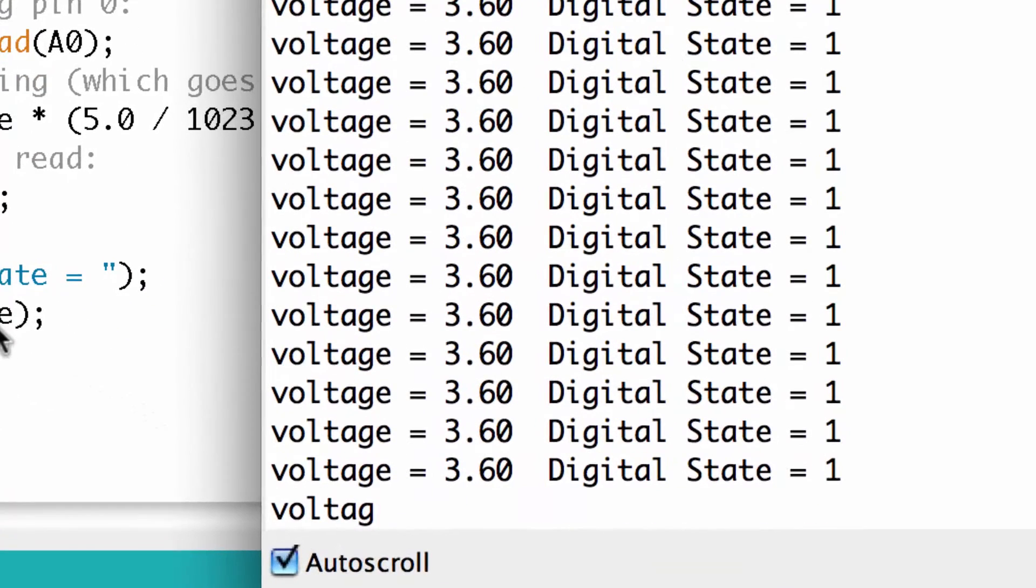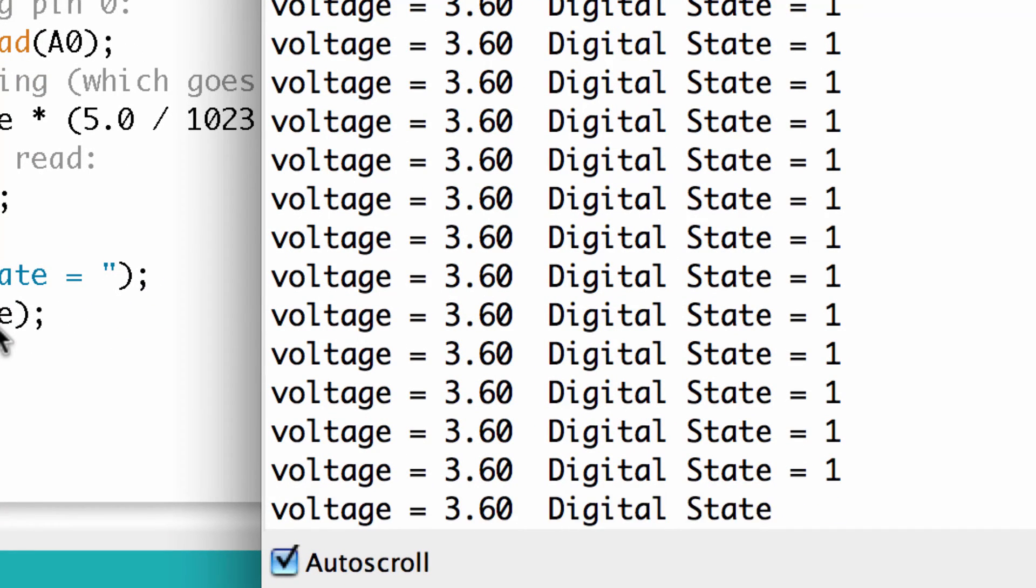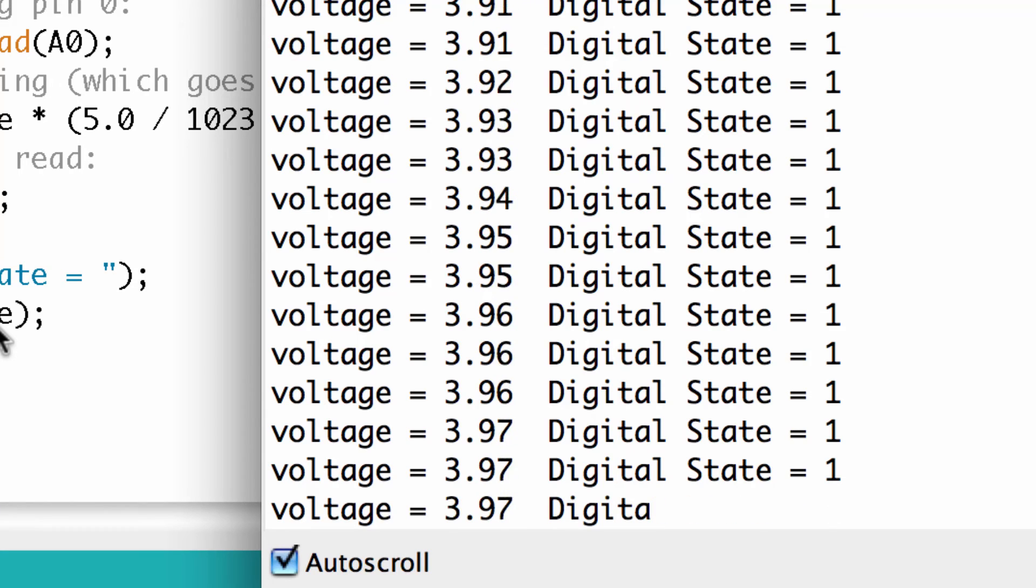If we look at the serial monitor, we can see right now that the voltage is set at 3.6 and the digital state is one. We would expect that right, because we said everything over 3 volts should be a high, and high and one is synonymous. Now what I'm going to do is start adjusting my potentiometer. As I go to the right, the voltage is getting higher and we would suspect that the state would stay one. And it does.